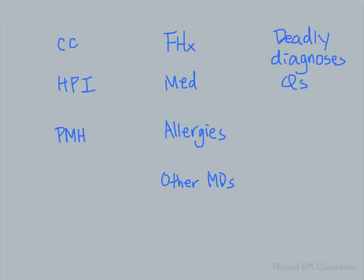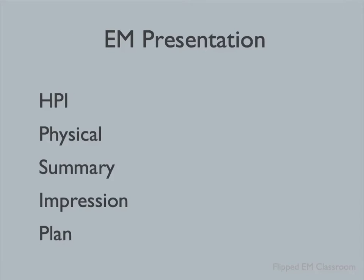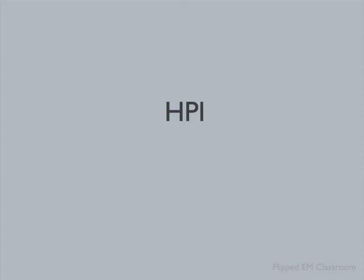Most emergency medicine presentations would be organized into a skeleton like this. It first starts with an HPI — history of presenting illness — and then leads to physical exam. After that, we want to hear your summary, your impression, and your plan. As you'll notice, the information you've just obtained from the patient can only be fit into the HPI. The question is, therefore, how do you fit all that information into the HPI in an organized way?